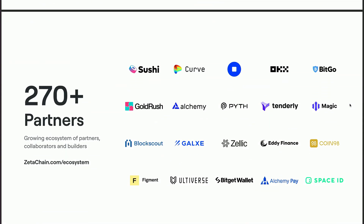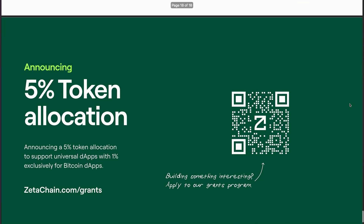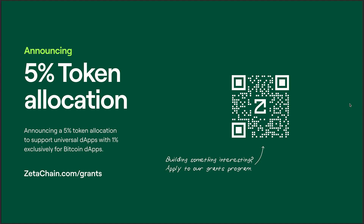These are our partners that have generously supported us so far, and we're always looking for more dApps, developers, and users on ZetaChain — particularly more dApps to build interesting use cases beyond token transfers. If there are any developers interested in what we're building, we have dedicated five percent of our token allocation towards grants to our builders.